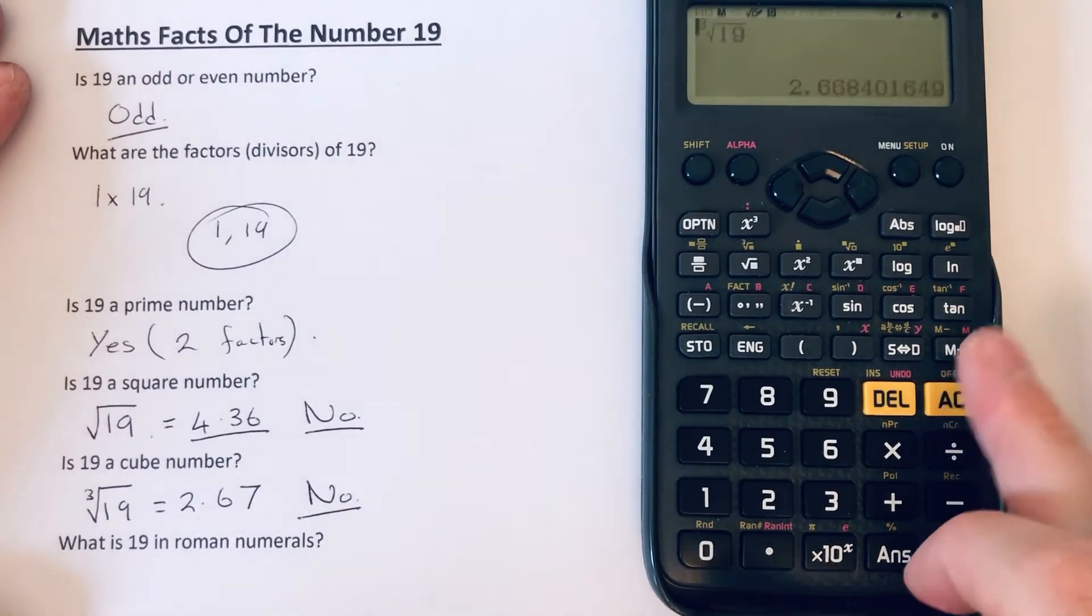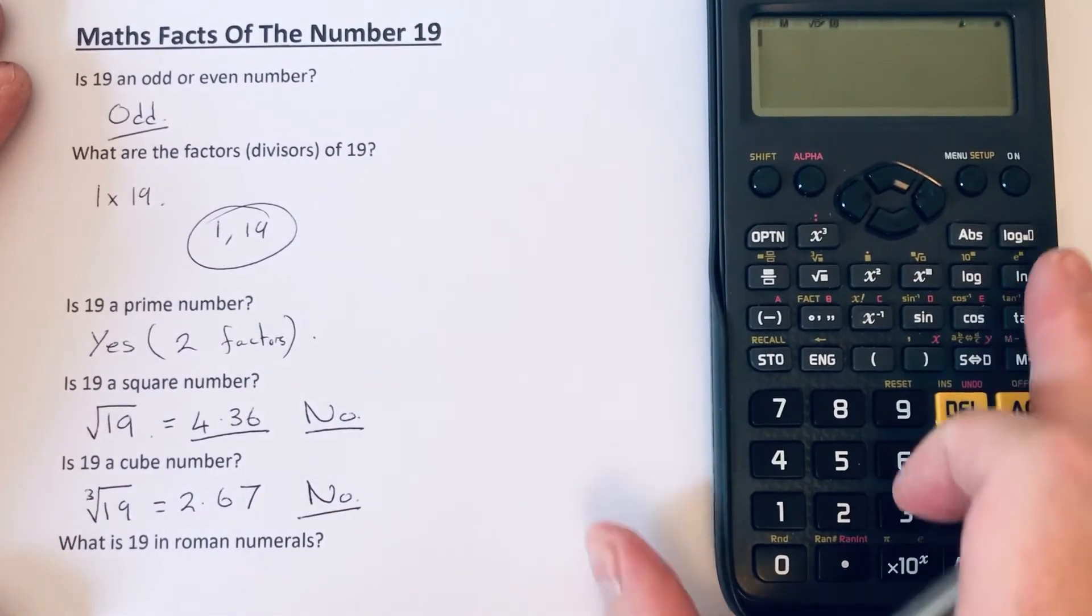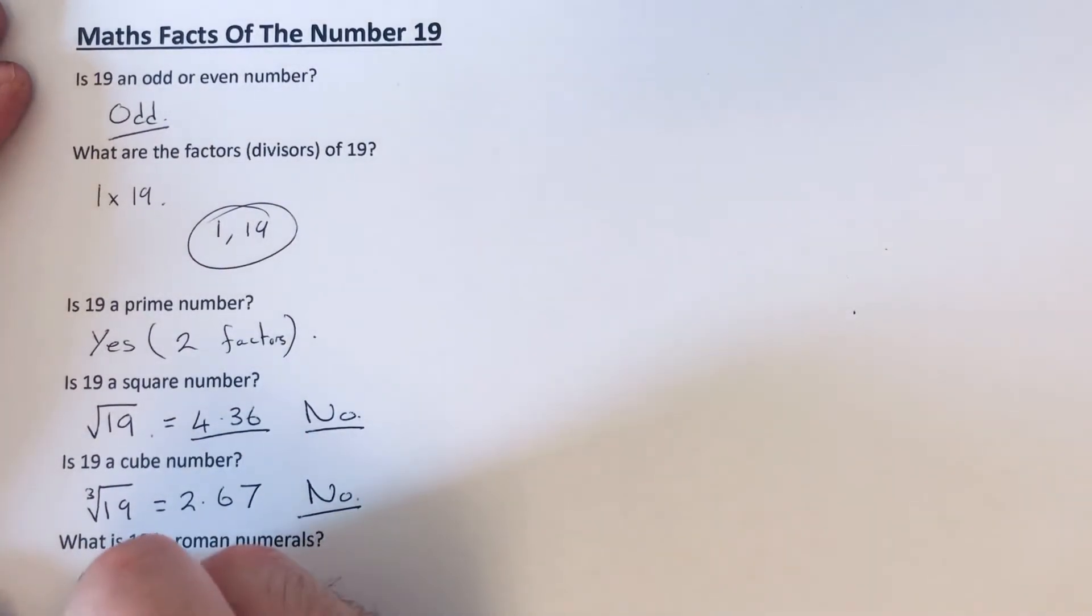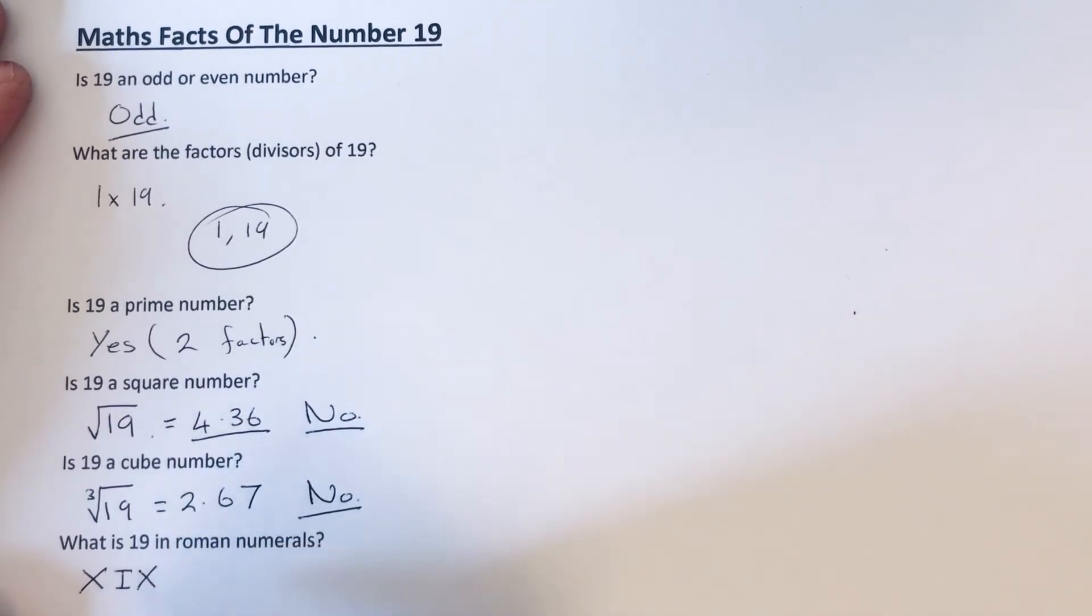And our final question is, what is 19 in Roman numerals? So if we do an X for 10, and then to get the 9, we need to do an I and an X.